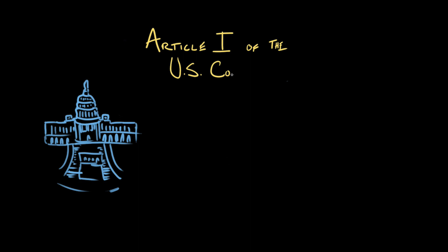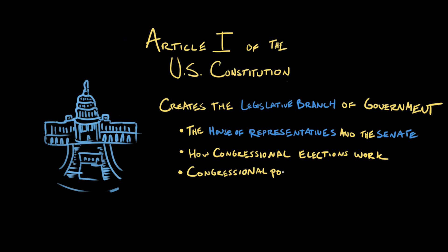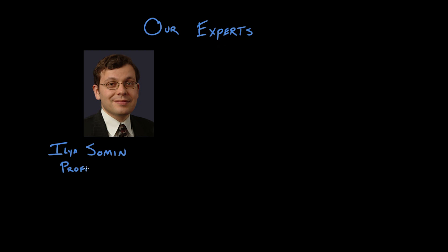Hey, this is Kim from Khan Academy, and today I'm learning about Article 1 of the U.S. Constitution. Article 1 is jam-packed with information about how our government is supposed to work, but principally what it does is create the legislative branch of government, which includes the House of Representatives and the Senate, which together comprise the Congress of the United States. Article 1 also tells us how people can get elected to those bodies and what powers Congress has. To learn more about Article 1, I talked to two constitutional experts.